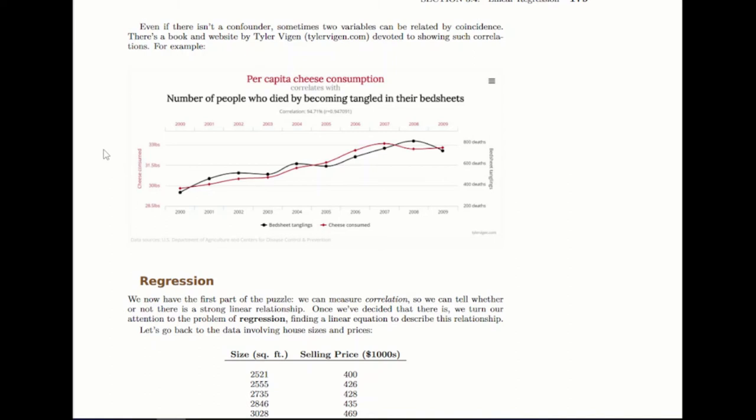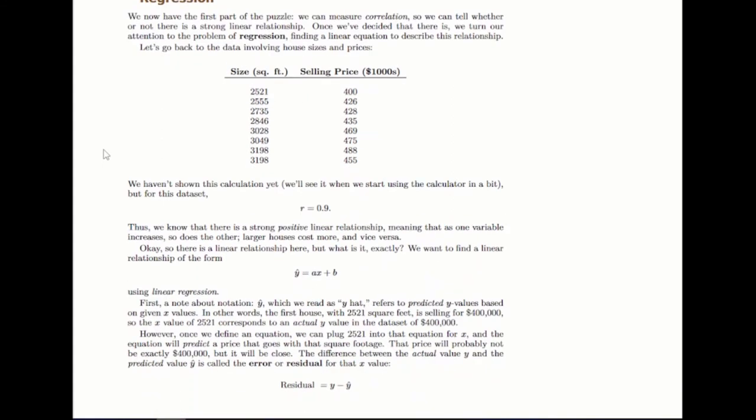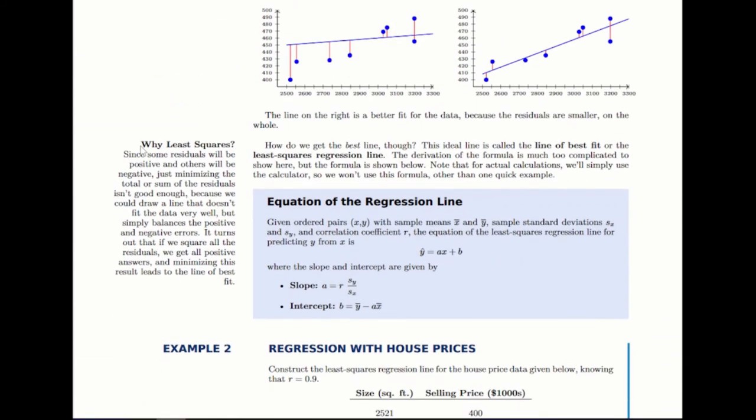So once we've decided that there is a correlation, once we've calculated an R value, as we'll see with the calculator a little later on, then we can get into the regression part, which says, okay, now let's find the actual equation that connects these two variables. And this is the part that is relatively familiar, where you've used the calculator for this before. But you can read through some of this description. Basically, this gives you the theory behind it. There are a couple of formulas that we won't really use, but this is where they come from.